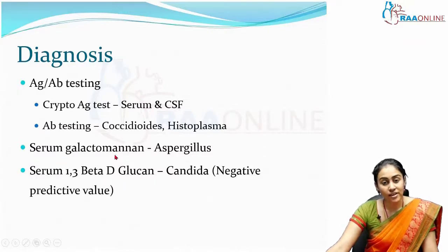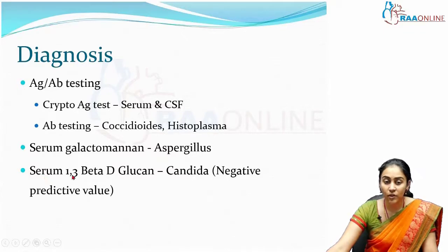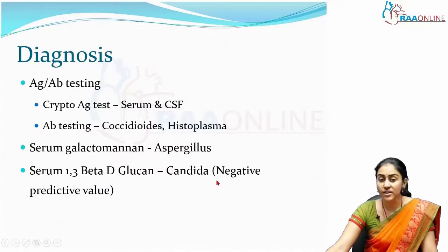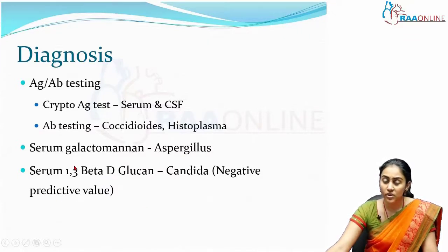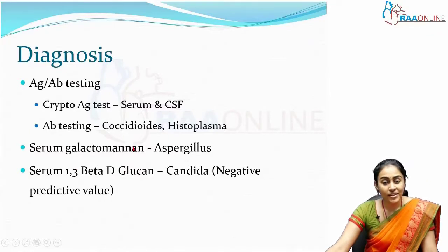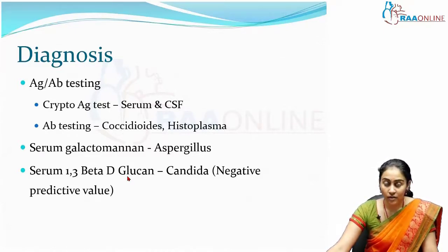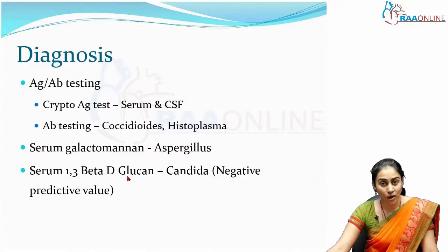Both the galactomannan and 1,3-beta-D-glucan tests have high negative predictive value, because there are many factors which could cause false positive results. If these tests are negative in a patient suspected of invasive fungal infection, that may be taken as a good marker to guide us to stop empirical antifungals in such patients.